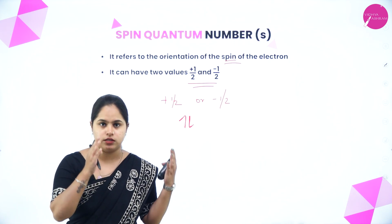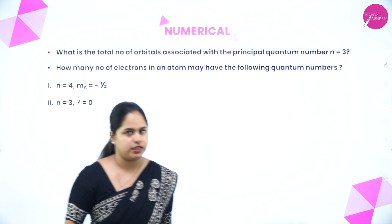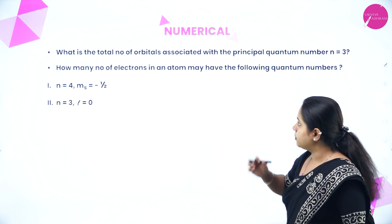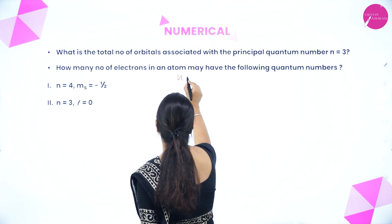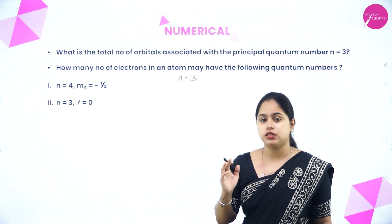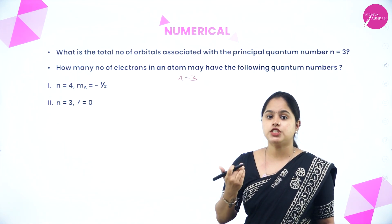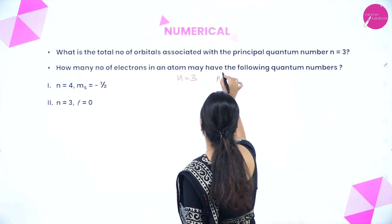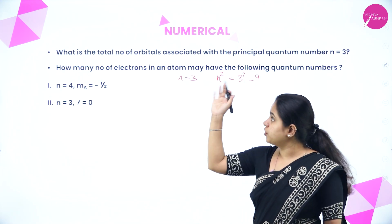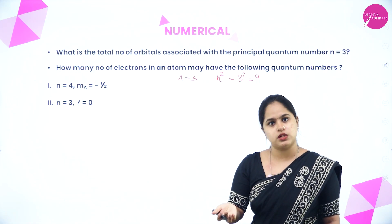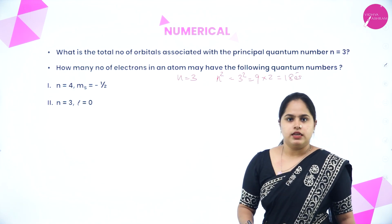Let's do some numericals. First: What is the total number of orbitals associated with principal quantum number n=3? Using n², that is 3²=9 orbitals. If the question also asks for the total number of electrons, it is 2n² = 2×9 = 18 electrons.